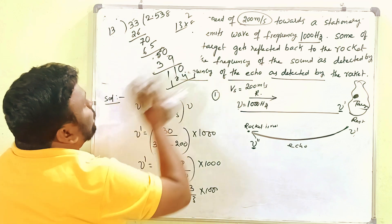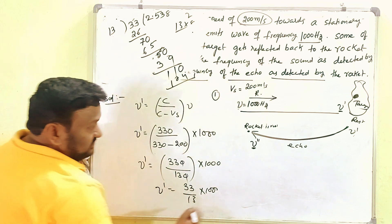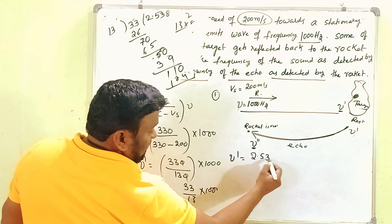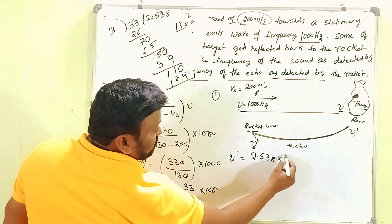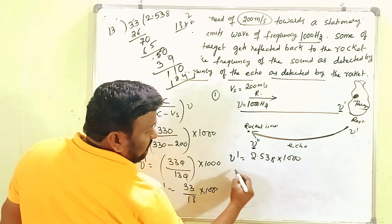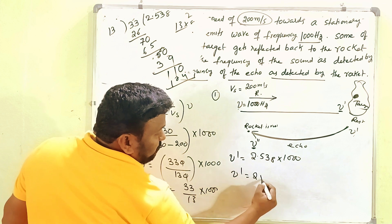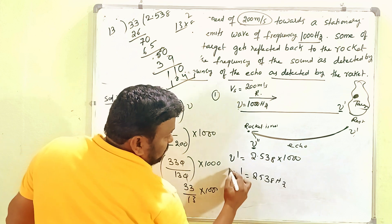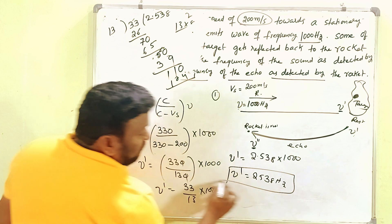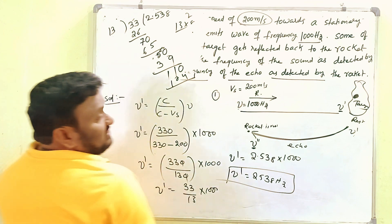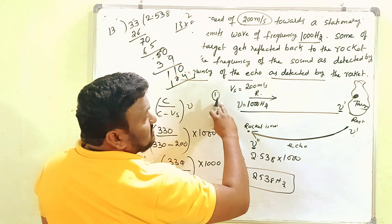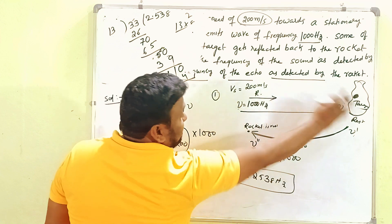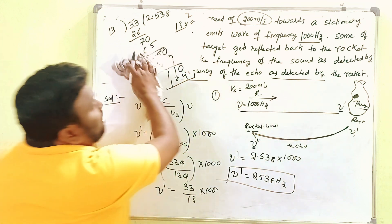So ν dash = 2.538 × 1000. That means ν dash = 2538 Hz. This is the apparent frequency detected at the target.